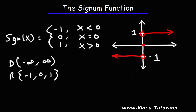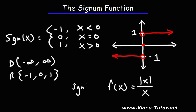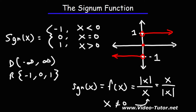The signum function is very similar to the absolute value of x divided by x. In fact, the signum function is equal to that function, and it's also equal to its reciprocal: x divided by the absolute value of x. The only difference is that x can't be zero, because if we have zero in the denominator of a fraction, that fraction will be undefined. Everywhere else, the signum function equals |x|/x or x/|x|, giving either one or negative one.